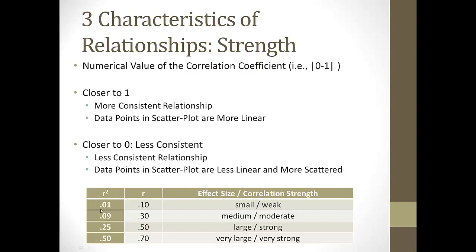As a rough guide: a correlation around 0.10 is considered weak, closer to 0.30 is a moderate relationship, around 0.50 is strong, and really anything above 0.50 is considered a very strong relationship. As the number increases, the strength increases and the relationship becomes more consistent.